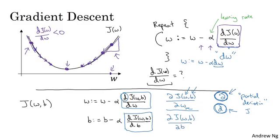Finally, when you implement this in code, we're going to use the convention that this quantity, really the amount by which you update w, will denote as the variable dw in your code. And this quantity, the amount by which you want to update b, will denote by the variable db in your code.